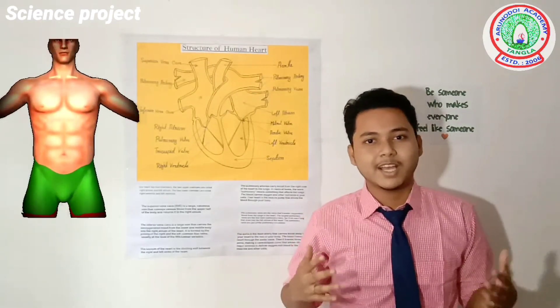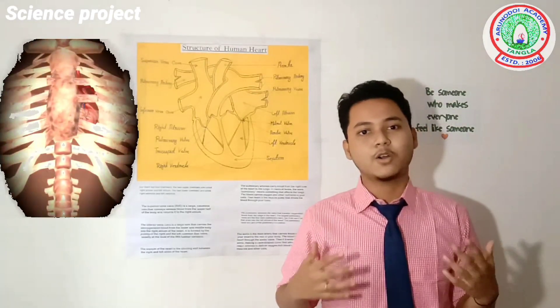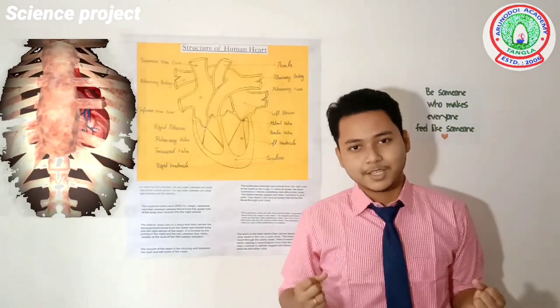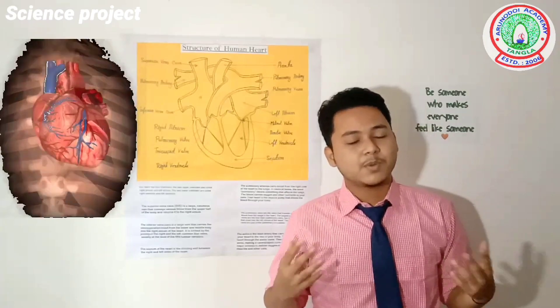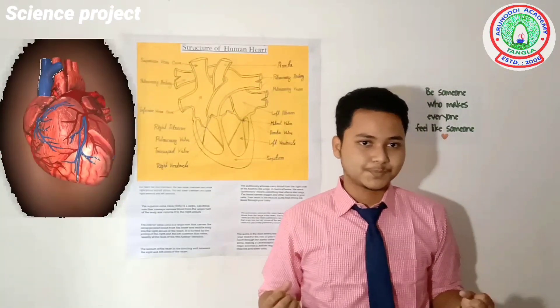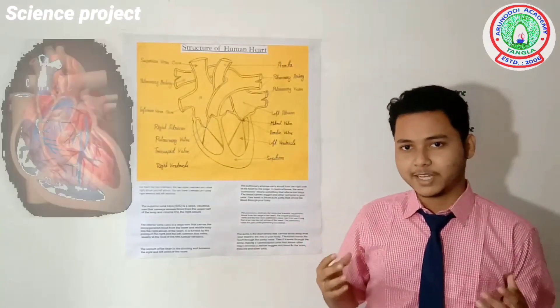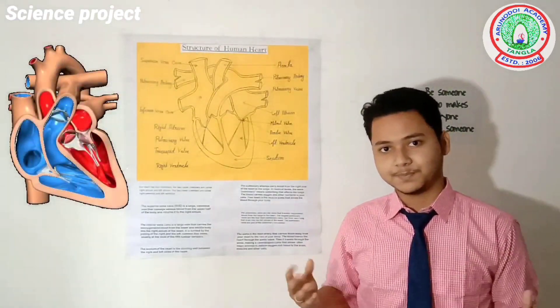Heart is basically a muscular organ which is protected by our ribcage. It pumps blood through the blood vessels of our circulatory system. Now let us understand the structure.